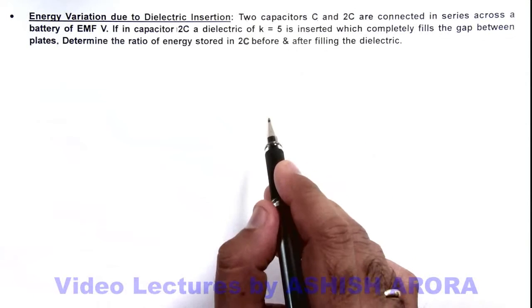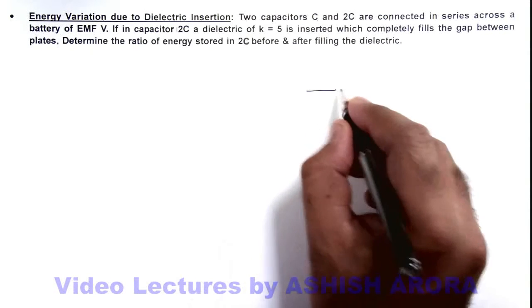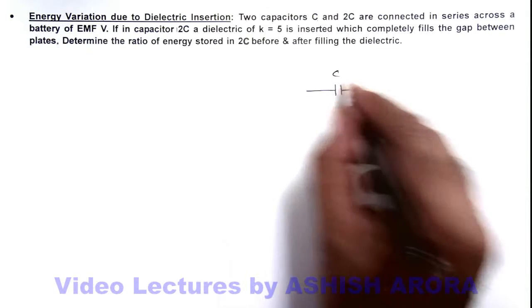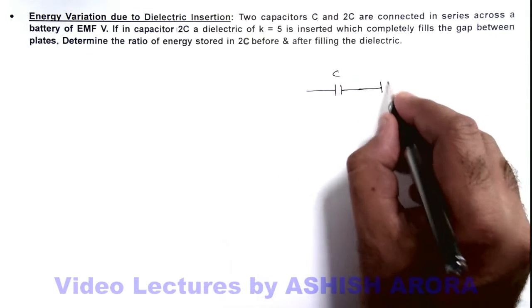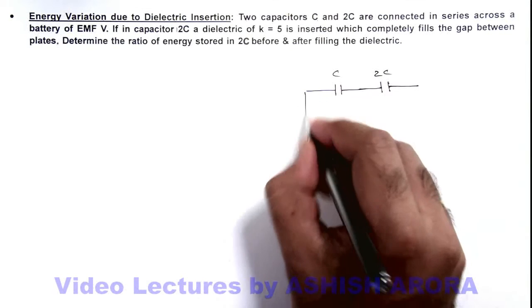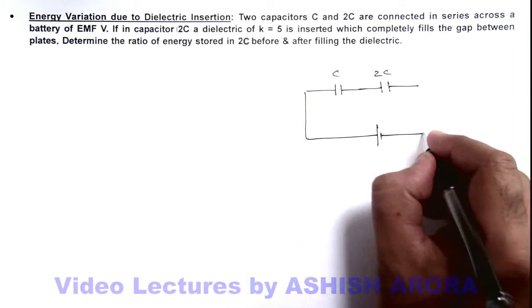Now in this situation, if we draw the circuit we are given that capacitor C and another capacitor 2C are connected in series across a battery of EMF V.